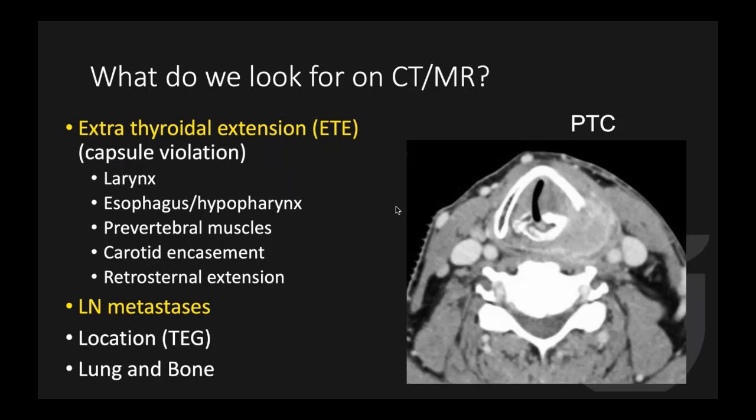We need to evaluate extension to the larynx, esophagus, hypopharynx, and prevertebral muscle. Is the carotid encased? Is there extension into the retrosternal region requiring a classic sternotomy? Is there lymph node metastasis, vocal cord paralysis, or distant metastasis to bone or lung?